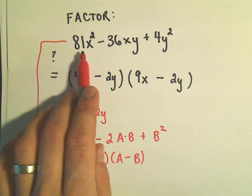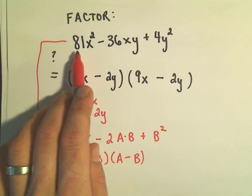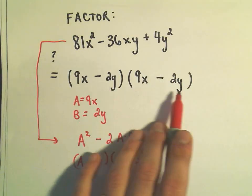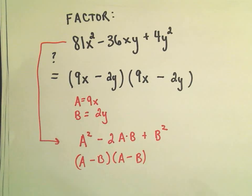81 is a perfect square, and 4 is also a perfect square. It just makes me think probably, not always, but at least that's a good first place to check.